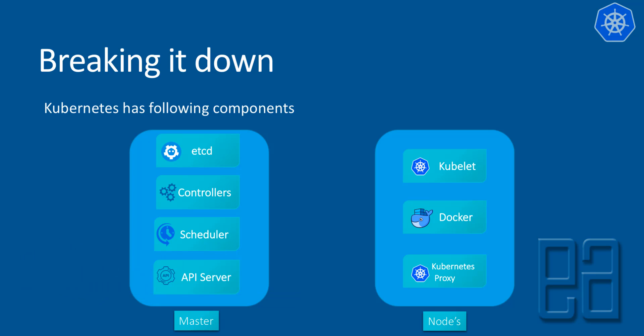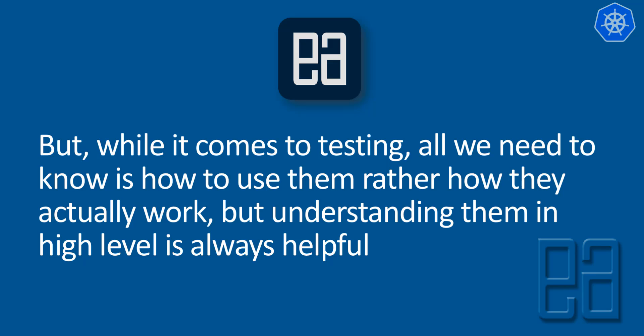We've already discussed Docker in our Zero Automation YouTube channel and Udemy courses, which is why we use it here. This is a high-level breakdown of what the master and nodes are about in Kubernetes — we'll cover the complete understanding of each component in upcoming videos. It may be confusing at first, but when it comes to testing, we need to know how to use them rather than exactly how they work internally, though understanding the high-level components is still very helpful.